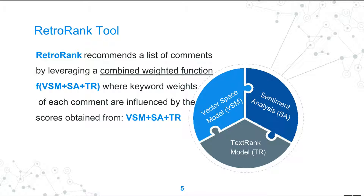You may wonder why I'm using three different techniques, but there is a reason. I focused on the specific characteristics of comments that are more positive — from my previous experience working in industry, comments that were more positive seemed to carry more informative content regarding the bug fix. By using sentiment analysis and the TextRank model — which finds the semantic relation of keywords — I capture cases where developers use different terms to refer to the same thing. The Vector Space Model is also used to capture relevance from the query input. Combining these three techniques is what I call the combined weighted function.